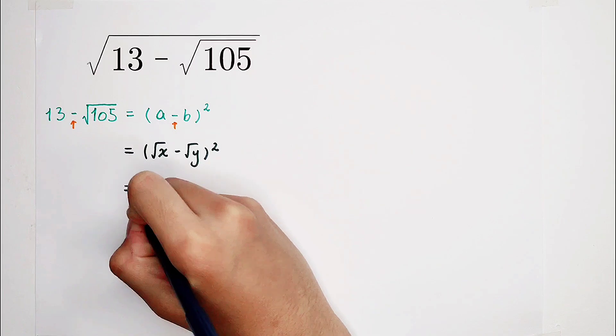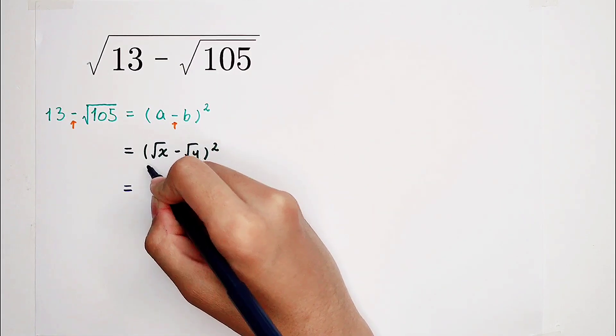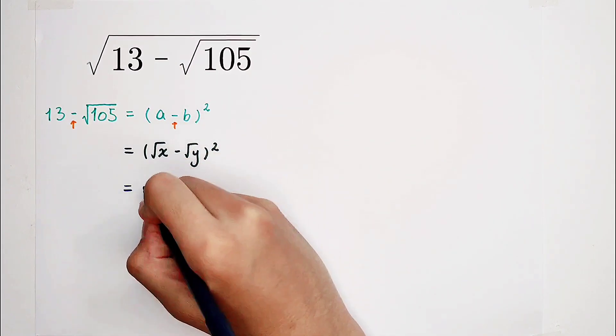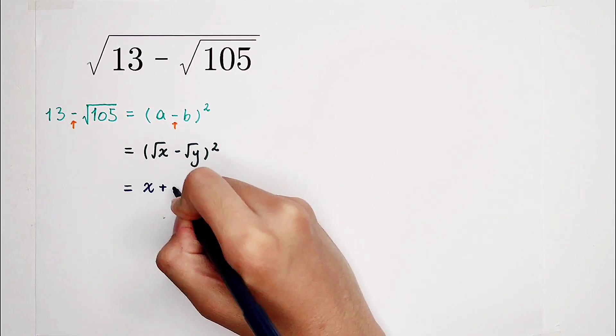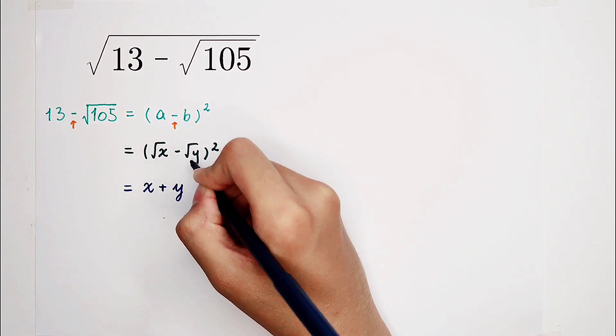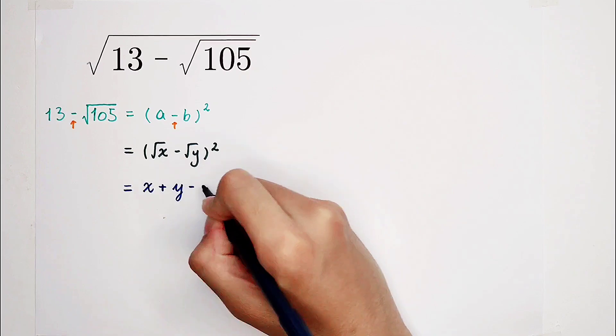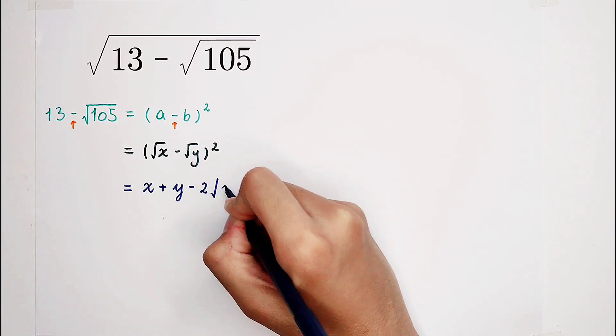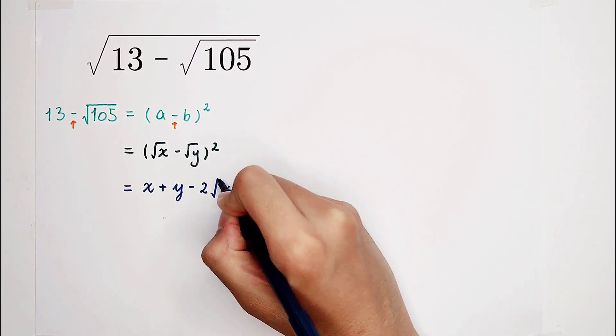Expanding, it is square root of x or squared is x, and then plus square root of y or squared is y, and then minus 2 times square root of xy.